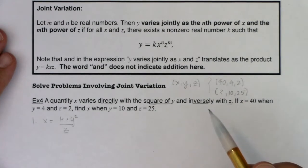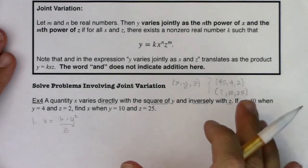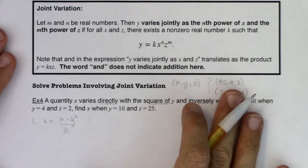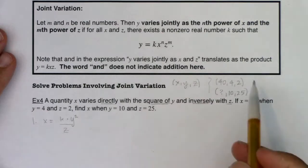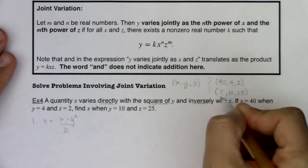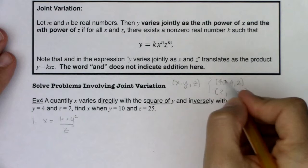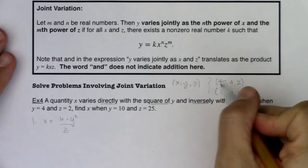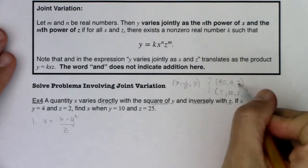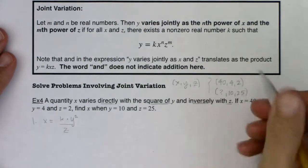Alright, so step two in solving these variation problems is to substitute the given values of the variables and find the value of K. So again, I have a complete ordered triple, and I have an incomplete one. Let's use the complete ordered triple. I'm going to plug in 40 for X, 4 for Y, 2 for Z. And let's see what we get back out here.